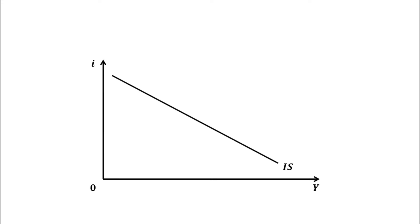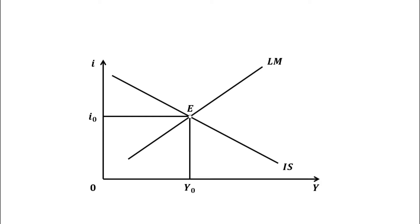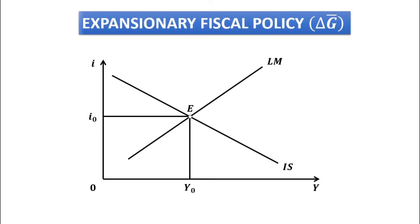This is the downward sloping IS schedule and the upward sloping LM schedule. Equilibrium is achieved at point E. The equilibrium interest rate is oi0 and the equilibrium output level is oi0.